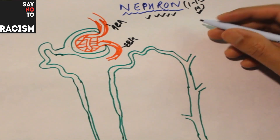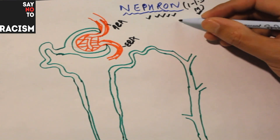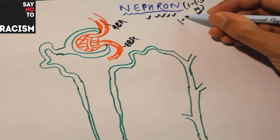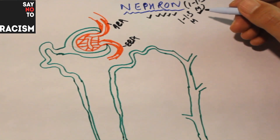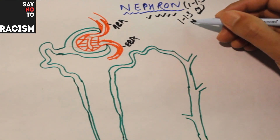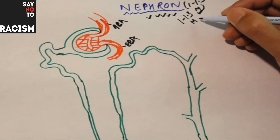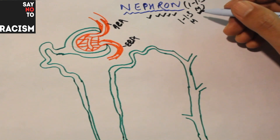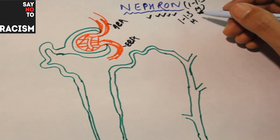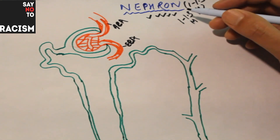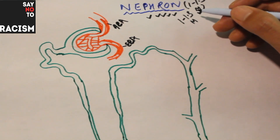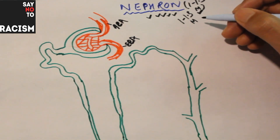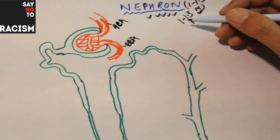There are approximately 1 to 1.3 million nephrons in each kidney. One million means 10 lakh, so approximately 10 lakh nephrons are there in each kidney. There are two kidneys, so approximately about 20 to 25 lakh nephrons are there in human kidneys.